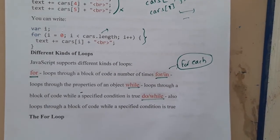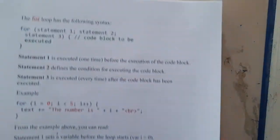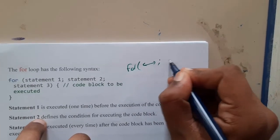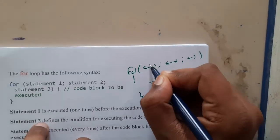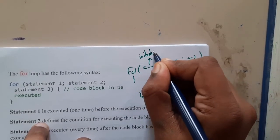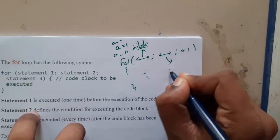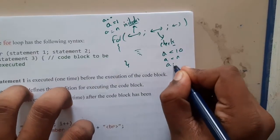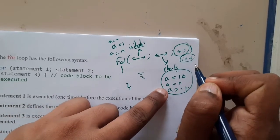Let us go through the for loop first. The for loop has a specific syntax — you need a statement, then a semicolon, then another statement, then a semicolon, then a closing statement, and then the code block. The first statement is initialization, where you set a value like 'a = 0' or 'a = 1'. In the middle you check a condition — for example, 'a < 10' or 'a >= 10' — to determine how many times the loop should continue.